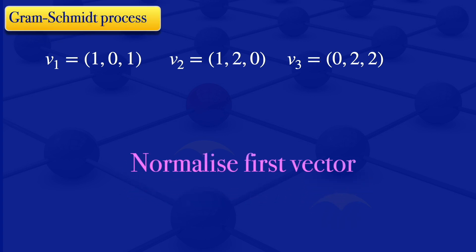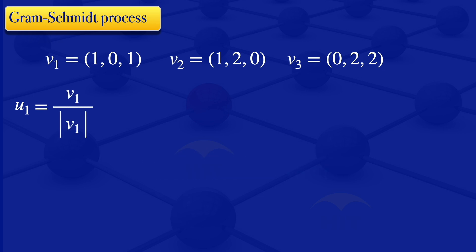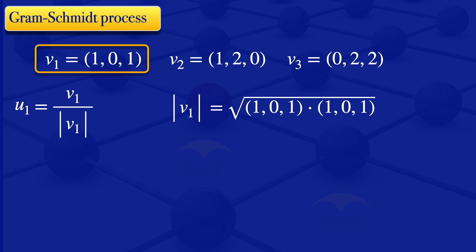The first step is to normalize V1. When you normalize V1, we get a new vector U1, which is given by V1 divided by the norm of V1. Our V1 is the vector 1, 0, 1. The norm of V1 is the square root of the inner product of V1 and V1. Multiplying corresponding elements then adding: 1 times 1 plus 0 times 0 plus 1 times 1 gives 2 under the square root, so the norm is square root of 2.